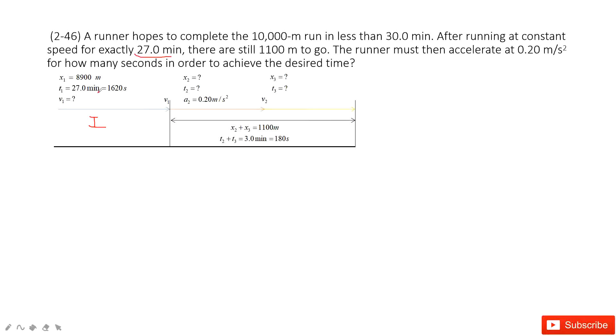We must convert it to seconds. And then there is still 1,100 meters to go. So that means part 2 and part 3 is 1,100 meters. So part 1 is just 8,900 meters. Because the total is 10,000 meters, we know the displacement and the time taken in part 1.